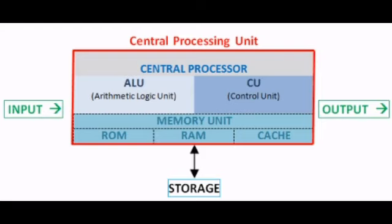The second part of the CPU is CU — the control unit. It works like a supervisor or a manager and checks that all computer operations are taking place correctly. It controls the working of all parts of a computer. The third part is the memory unit. The CPU stores all the data and instructions that need to be processed in the memory unit.